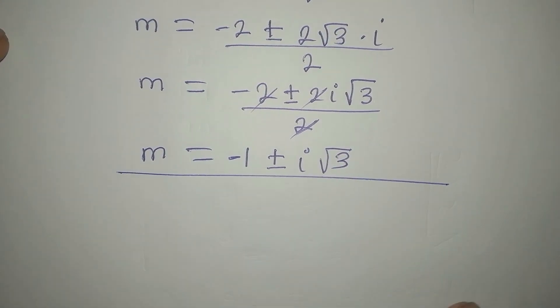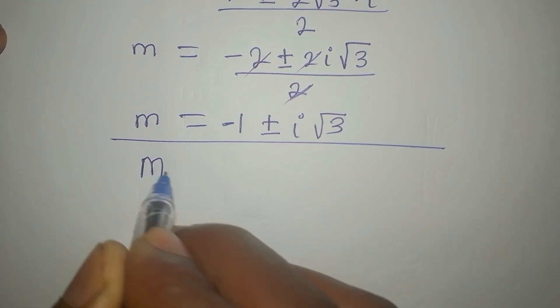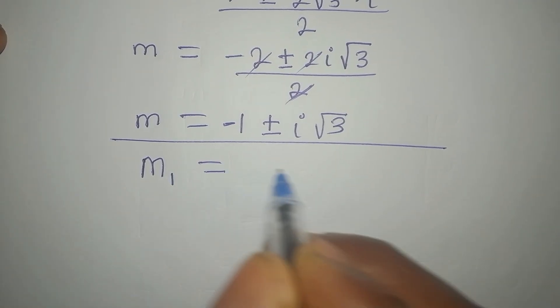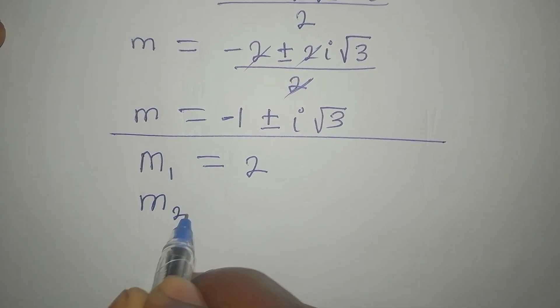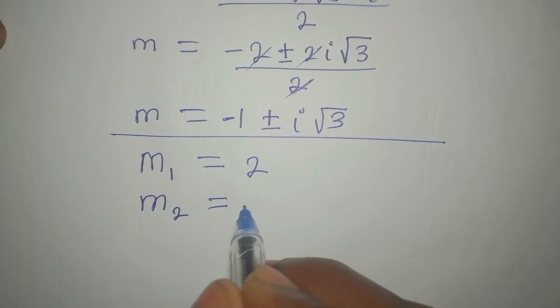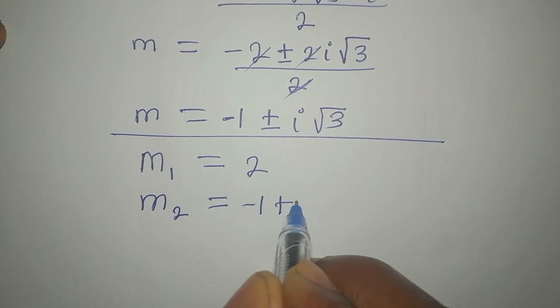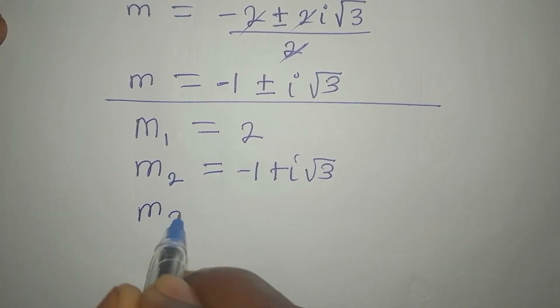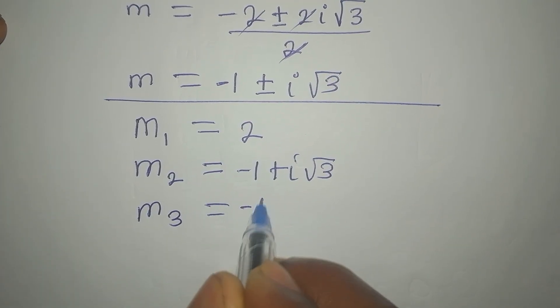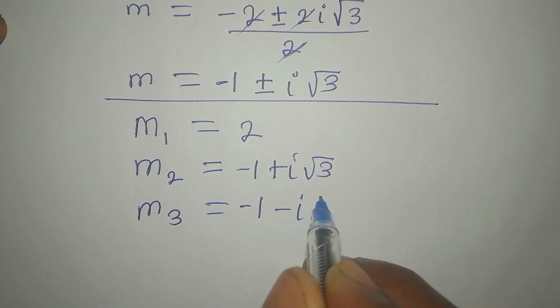Now, let's bring the three solutions together. We had the first one, which is m1, and it's equal to 2. Then the second is m2, and it's from here, minus 1 plus i root 3. That is our m2. Then our m3 is minus 1 minus i root 3.